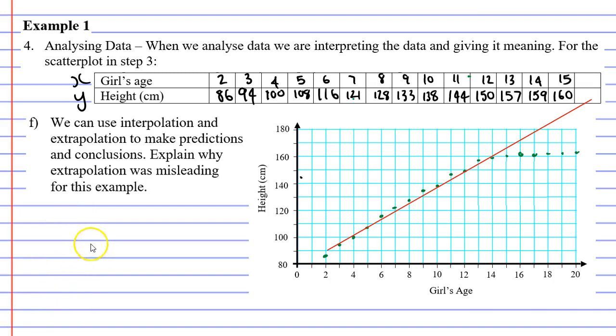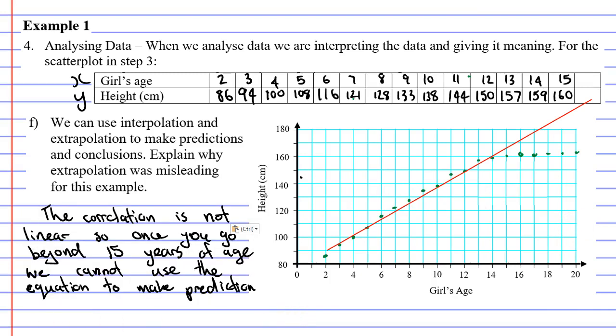So what are we going to write in question F? We can say that the correlation is not linear. Therefore, once you get beyond 15 years of age, you can't really use this equation to make predictions. Anyway, that concludes our video on example 1. Remember to read the description below for links to work booklets that relate to this video.